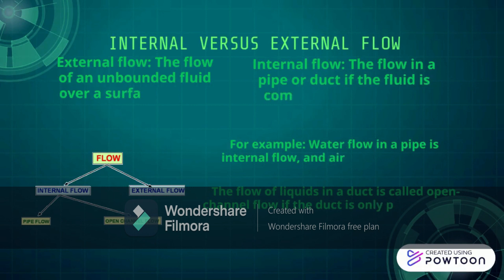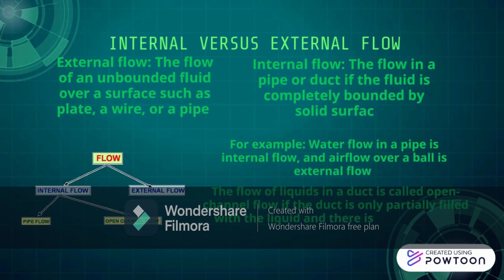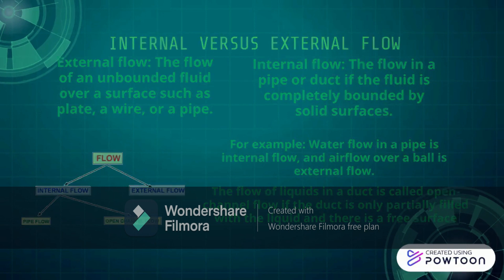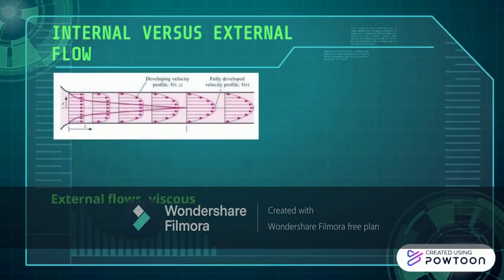For example, flow in a pipe is internal flow, and airflow over a ball is external flow. The flow of liquids in a duct is called open channel flow if the duct is only partially filled with the liquid and there is a free surface. Internal flows are dominated by the influence of viscosity throughout the flow field, while in external flows, viscous effects are limited to the boundary layers near solid surfaces and to wake regions downstream of bodies.